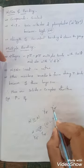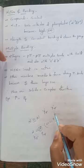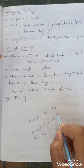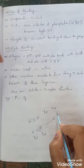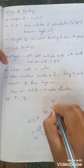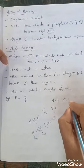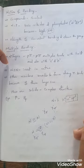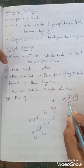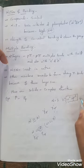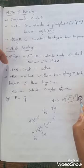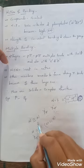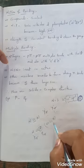Nitrogen uses only P orbitals to make multiple bonds such as pi bonds and cannot use D orbitals, because there is no vacant D orbital in nitrogen. Nitrogen's atomic number is 7, with configuration 1s², 2s², 2p³. The outermost configuration is 2s², 2p³ — there is no D orbital, so nitrogen can form only Pπ-Pπ multiple bonds with itself and with carbon and oxygen.